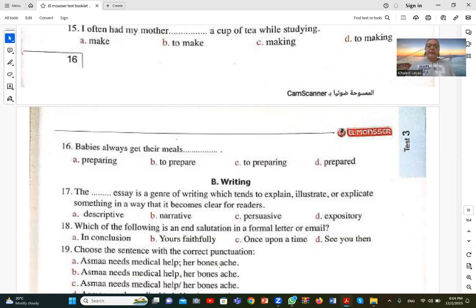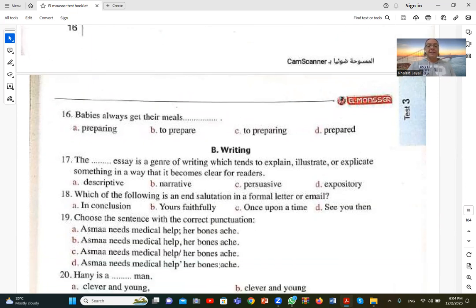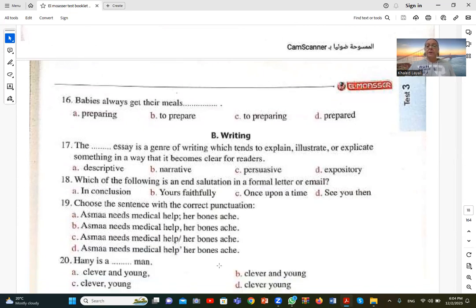Number seventeen. The essay is a genre of writing which tends to explain, illustrate or explicate something so it becomes clear for readers. نوعية المقال اللي بيشرح ويوضح ويدي أمثلة عشان يبقى واضح أمام القارئ is called expository. Expository means making exposition, clarification or explanation. Expose something means to reveal and explain it. Expository essay is writing aimed at explanation or clarification. D expository is correct.